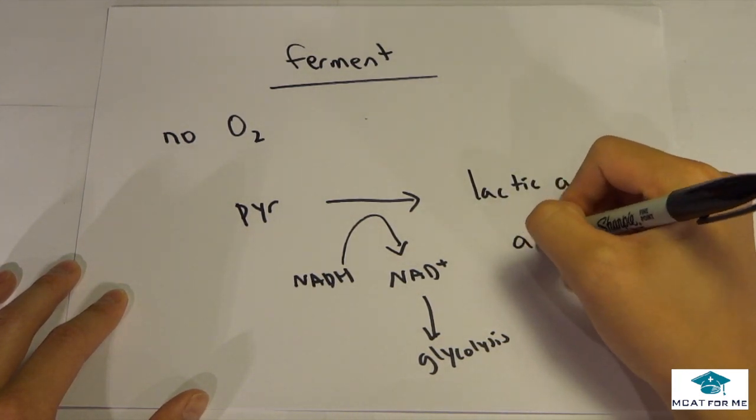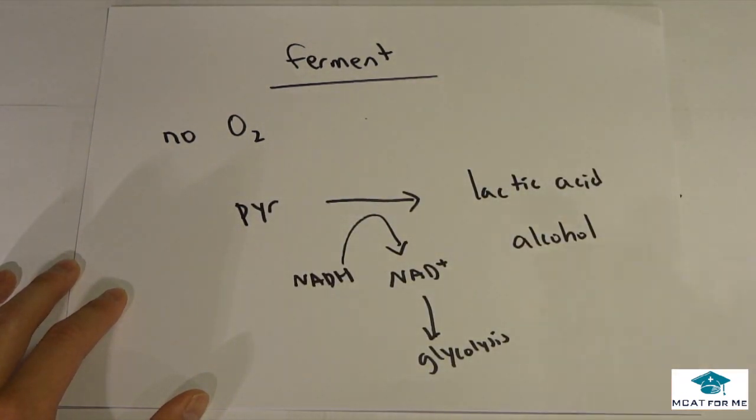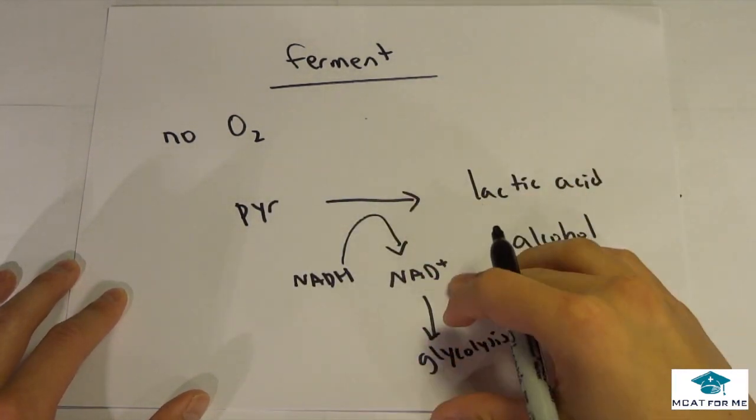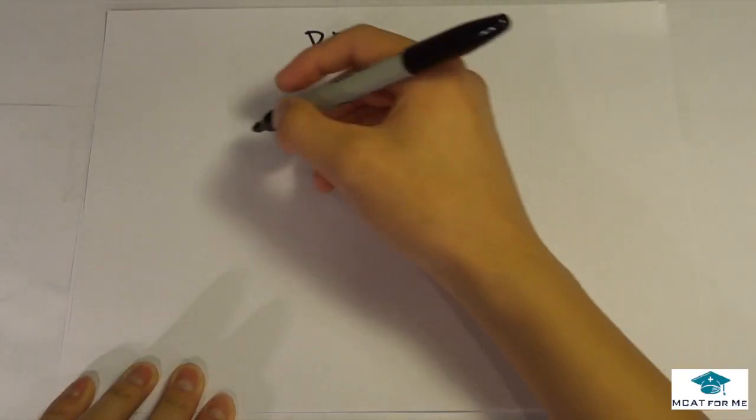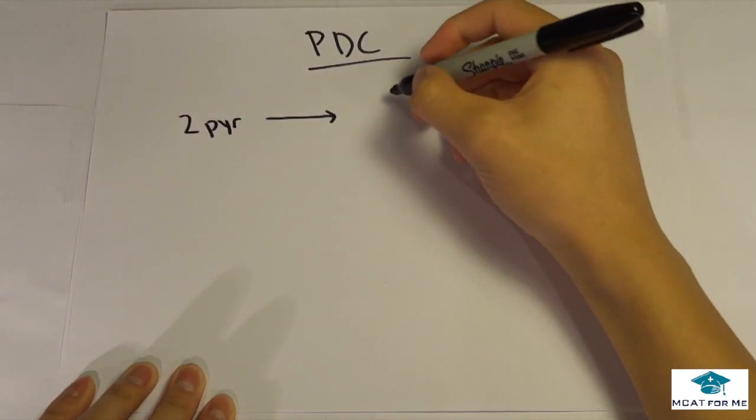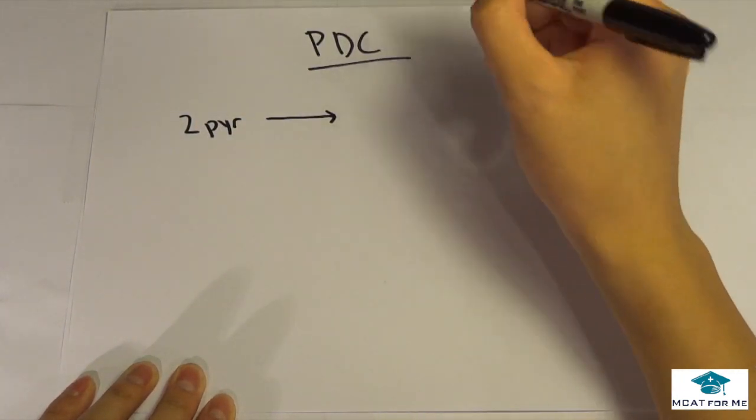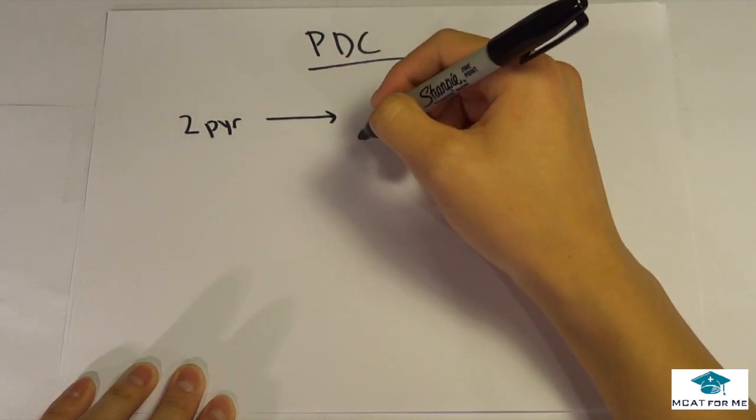That's the only point of fermentation is to reform this NAD and that will go into lactic acid, or it will go into that alcohol depending if you're a yeast. So that's all that you need to know for fermentation. Now for the PDC. We start with 2 pyruvate and this was after glycolysis. PDC only occurs when there's oxygen. So it goes into this PDC complex.